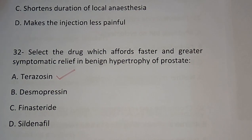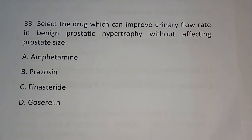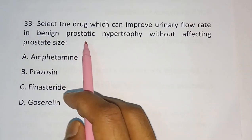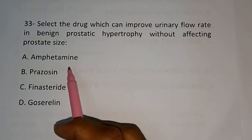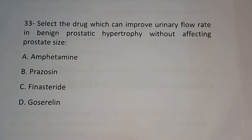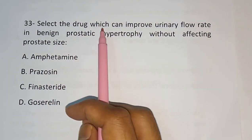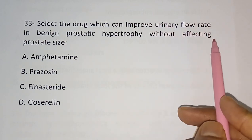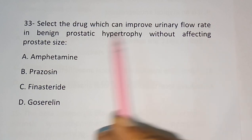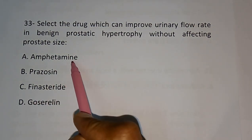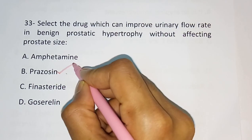Question number 33: Select the drug which can improve urinary flow in benign prostatic hypertrophy without affecting prostate size. Options are: Amphetamine, Prazosin, Finasteride, Goserelin. The correct answer is: Prazosin.